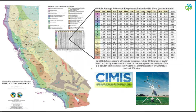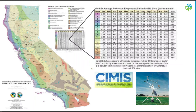California has a great resource of reference ET data provided by the network of CIMIS weather stations. Many growers are likely using monthly average reference ET data based on the zone or specific region that they're located. Still others may take the added step of downloading ET data from a proximate CIMIS weather station. While this is a great resource for farmers in the state, using monthly average historical data can show a lot of variance, especially from one year to the next.